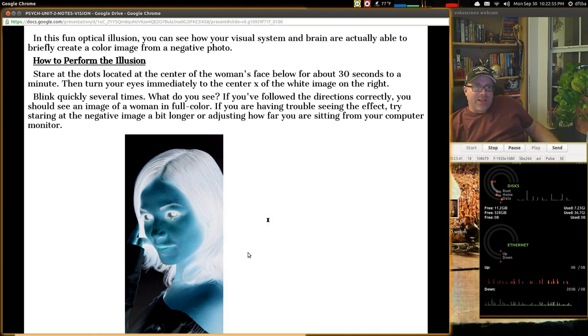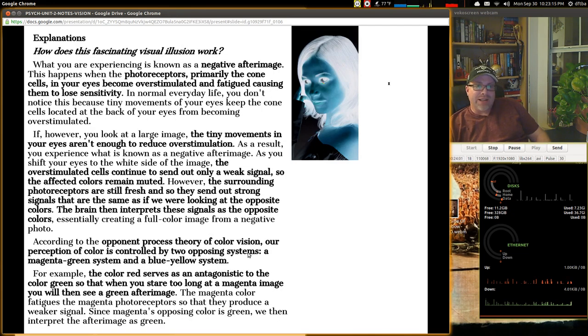Okay. If you follow the directions correctly, you should see an image of the woman in full color. It's pretty neat, isn't it? So, if you're having trouble seeing the effect, you may want to try staring at the negative image a bit longer, adjusting how far you're sitting from your computer monitor. You may need to get a little bit closer, in other words. So, that's a pretty neat one. One of the ones that I kind of enjoy the most. So, how does this illusion work? I'm going to leave this up here for you to see.